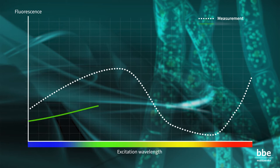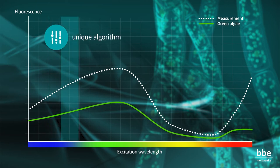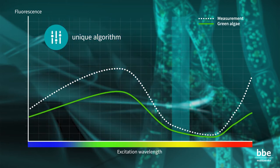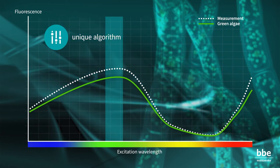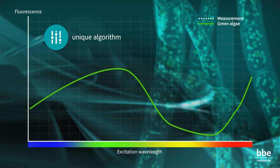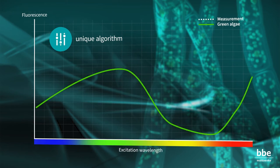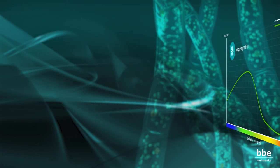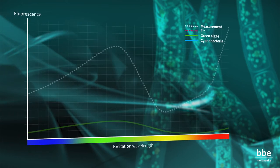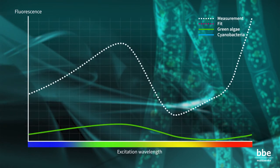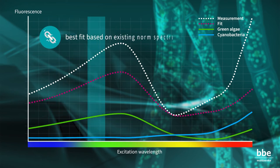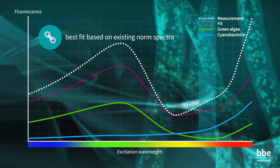The BBE software, with its unique algorithm, searches for the best fit based on existing norm spectra. Looking at a measurement of a sample with two algal groups, the fluorescence spectrum may look like this. Again, the software searches for the best match.